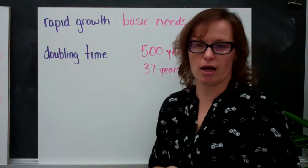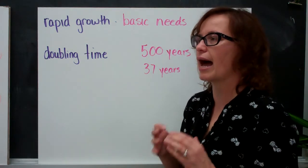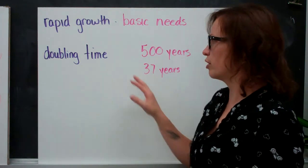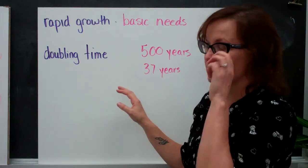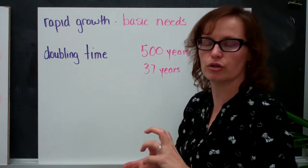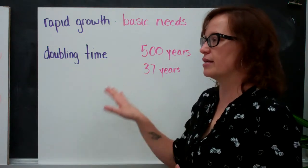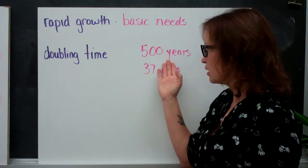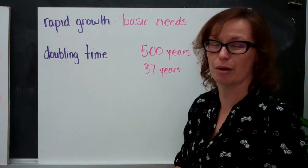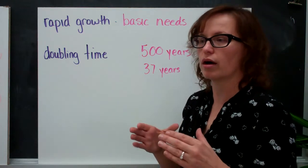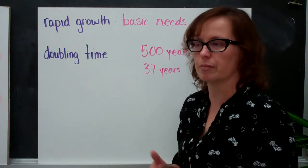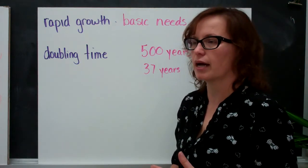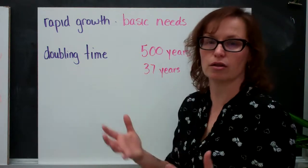There's also statistics around doubling time, where you collect data on how quickly a community's population will double. And one of the things that statistics have shown is that sometimes this is a difference, one of the things they use to measure developed versus developing countries is developed countries tend to take longer to double in population. So the statistics right now are around, it takes about 500 years for a developed country to double its population. And this could be due to fewer people having children and choosing other things besides large families.